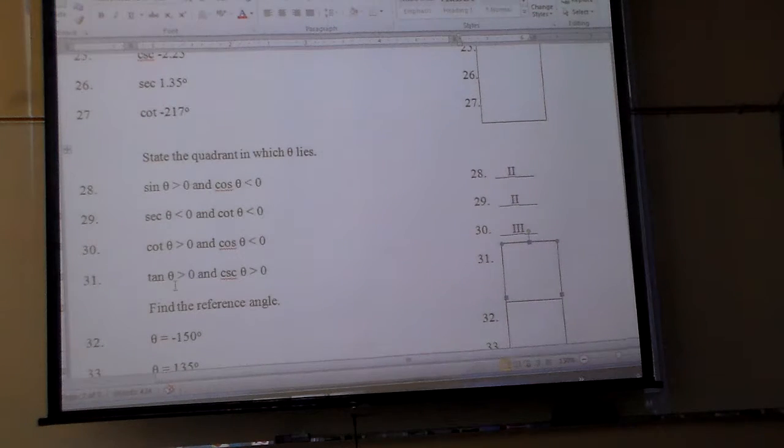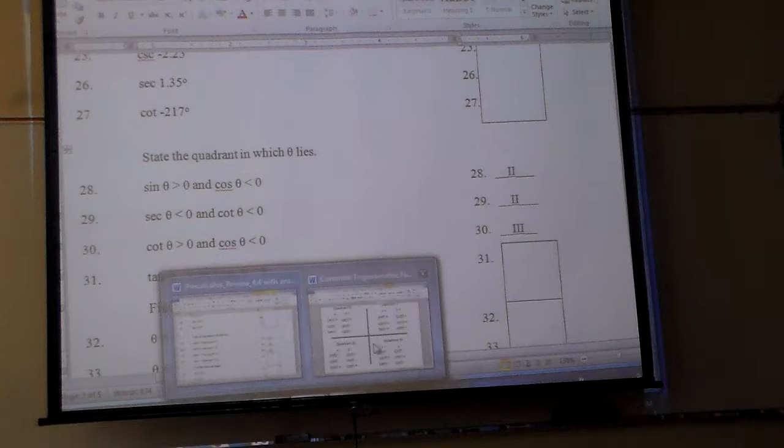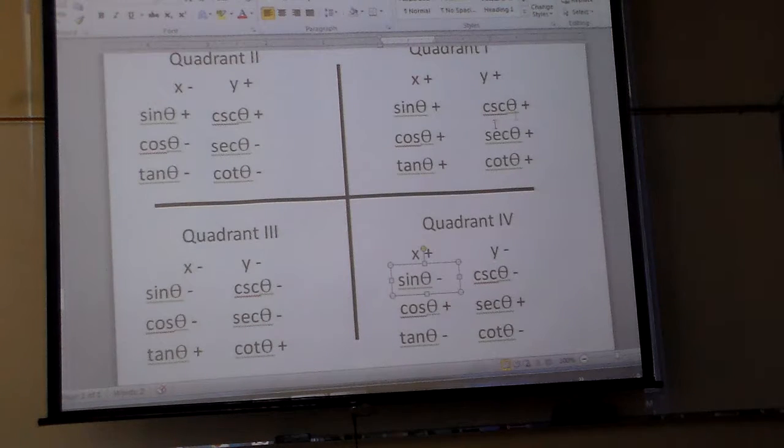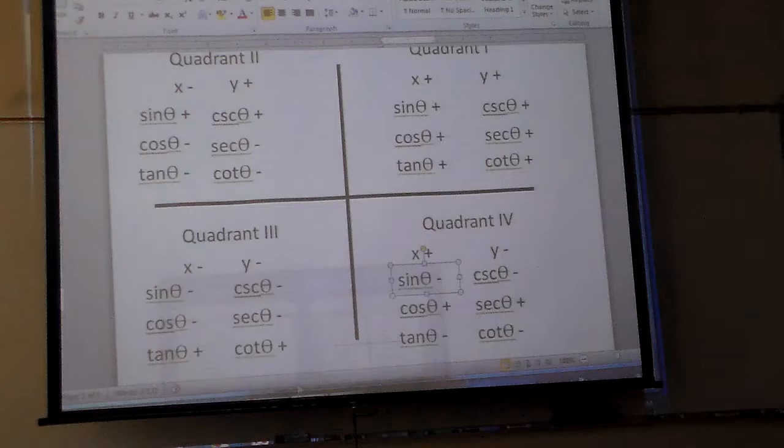Now I'm looking for tangent positive and cosecant positive. Oh, that one's almost too easy. Where's the only place everything is positive? Quadrant 1. Tangent and cosecant are both positive in quadrant 1.